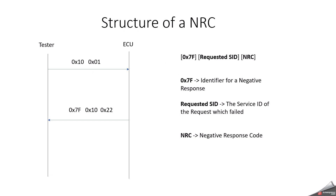This is the structure of an NRC. When the tester requests with 10 01 and the ECU is not able to process it, it responds with a negative response. The first byte 7F indicates it is a negative response. The second byte echoes the requested SID — here 10 for diagnostic session control. The third byte is the actual NRC negative response code — here 22, indicating conditions not correct.